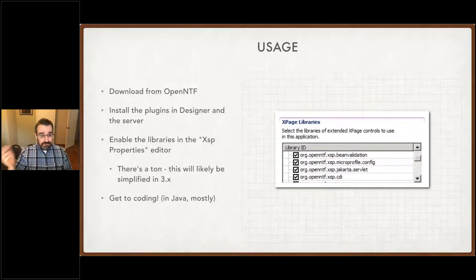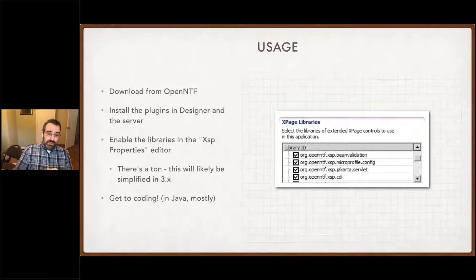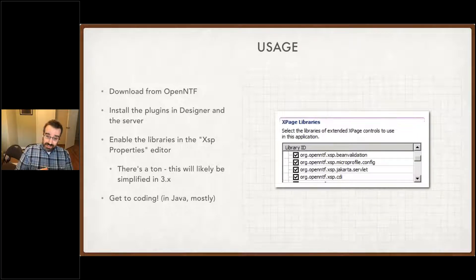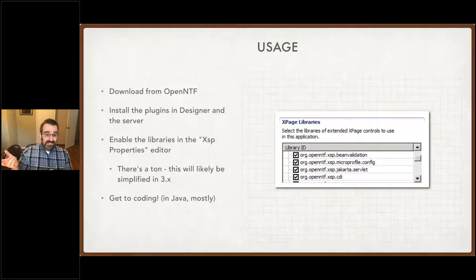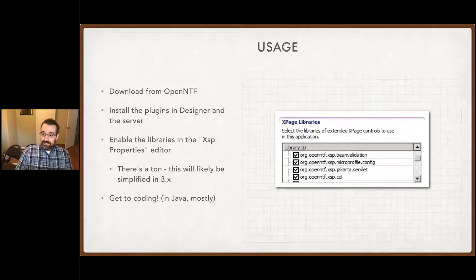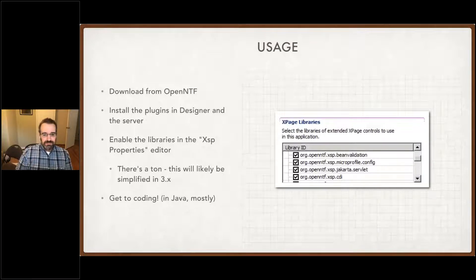To use it: you download it from OpenNTF, then install the plugins in Designer and in the server the same way you would with POI4XPages or the extension library. Then you enable the libraries in the XSP properties editor. Each feature I added as another library — I'm probably going to shrink that down to a core set plus add-ons. Once you're done with that, you get to coding. Some features require changing Java policy, but you don't need to write with other tools, use Maven, or do anything outside of the Designer.